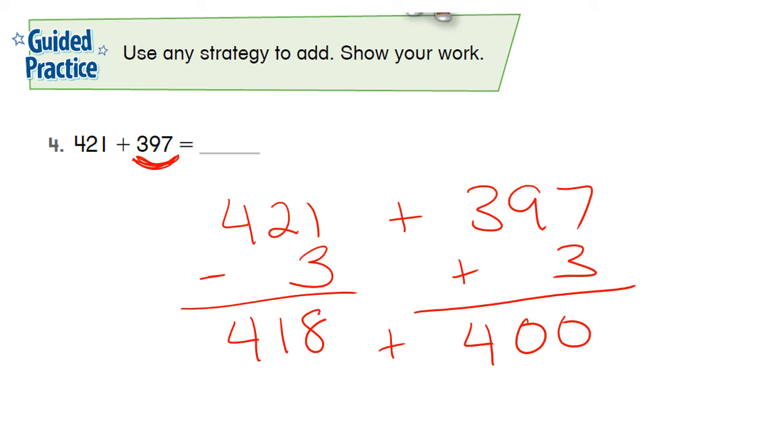So when I add those two together, 418 plus 400, the easier numbers, I get 818. So that's how I solved number four. That's the guided practice. Now your job will be to go ahead and practice on your own and see what you can do. You got this!